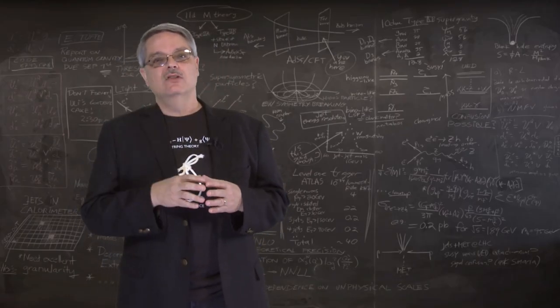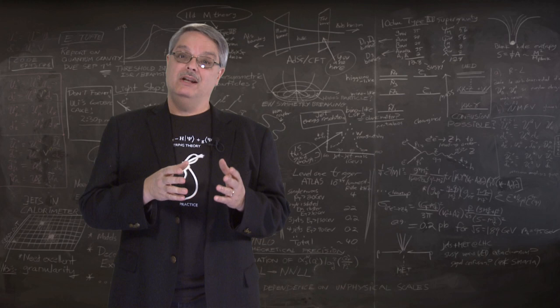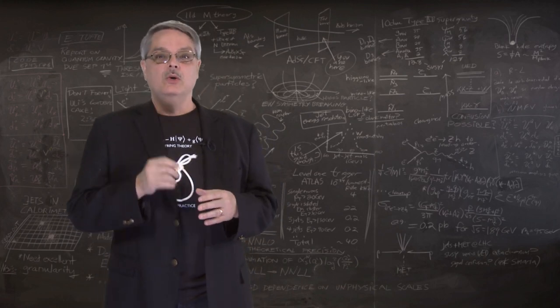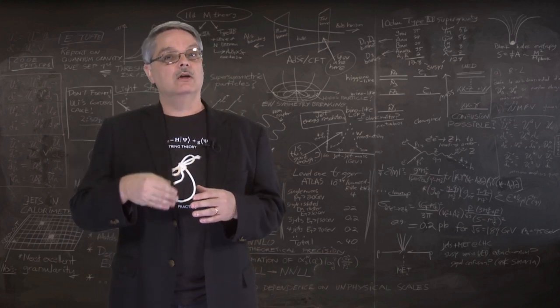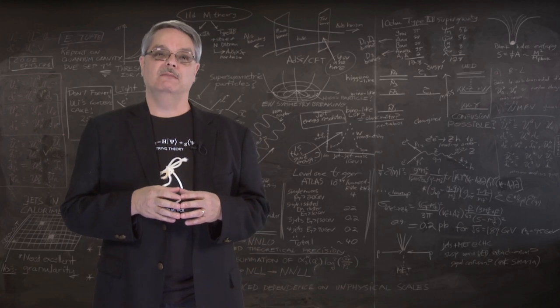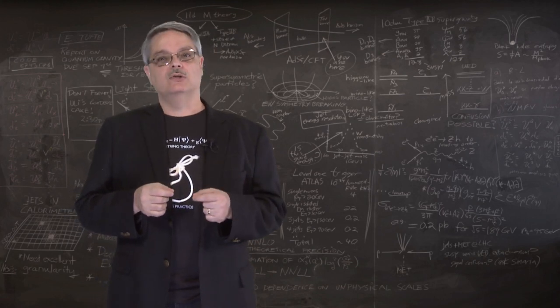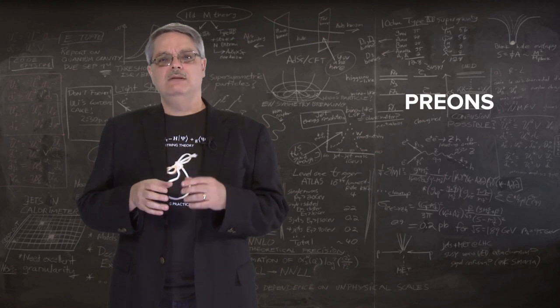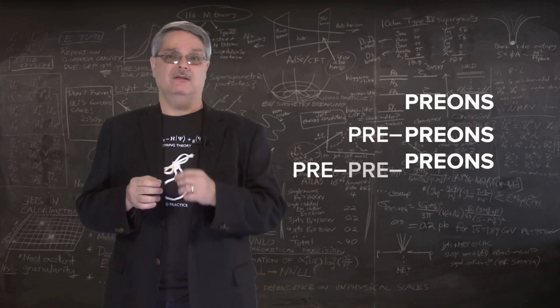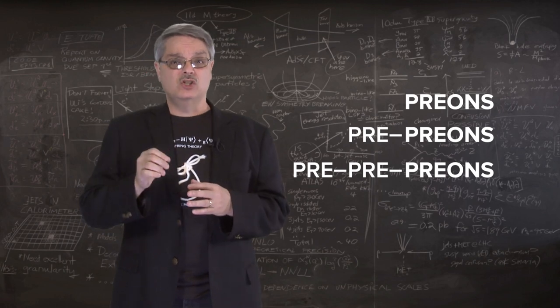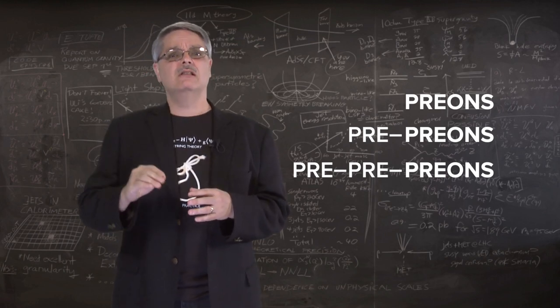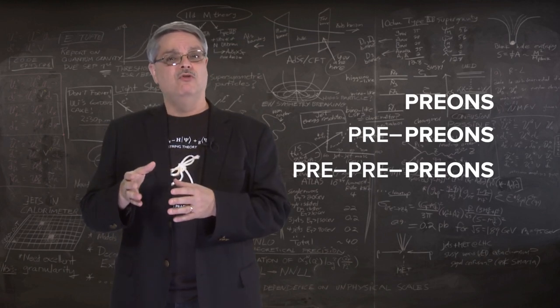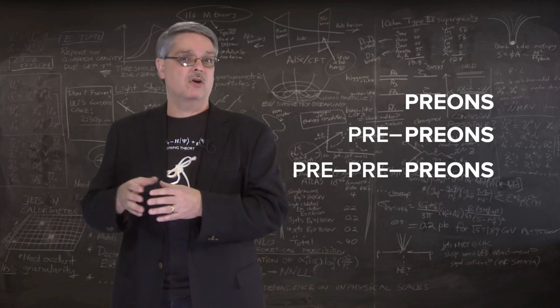Well sure. Even though they haven't been found and, to be honest, may not even exist, we already have a name for the layer below quarks and leptons. These smaller particles are called preons. But there's no reason there couldn't be pre-preons and pre-pre-pre-preons and so forth. In short, there could be a long line of undiscovered particles before we find the ultimate and smallest particle of all.